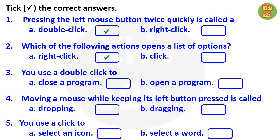Number three: you use a double click to — answer is option B, open a program. Question number four: moving a mouse while keeping its left button pressed is called — answer is option B, dragging.